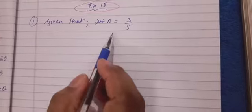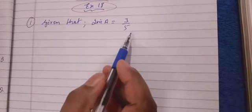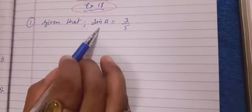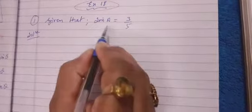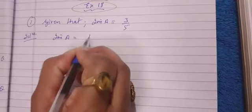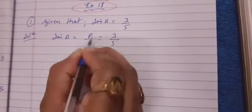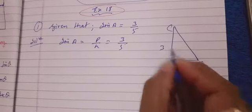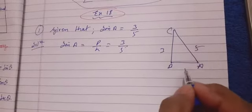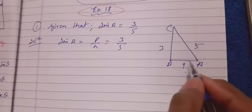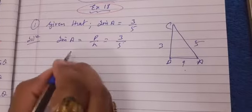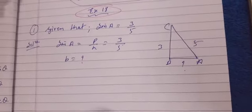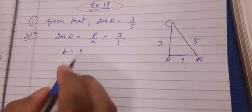Finding all other trigonometrical ratios means: sin is given, so we have to find cos A, tan A, cot A, sec A, and cosec A. We know that sin A equals p by h, so p equals 3 and h equals 5. Since p and h are given but b is not, and we need b for cos and tan, we are going to find the value of b by Pythagoras theorem.